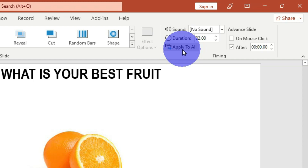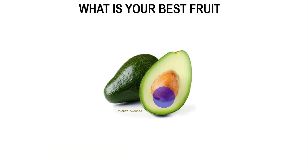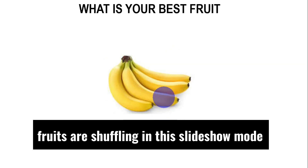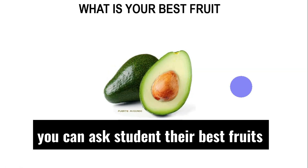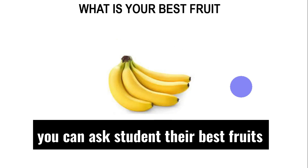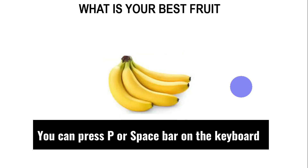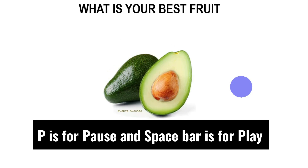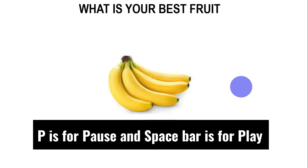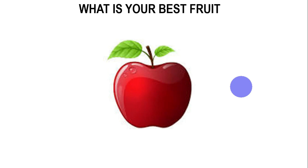Now let's jump to slideshow mode. Press F5 on the keyboard to start. Watch the slides shuffle through the fruits. The result shows Apple as the fruit — so any student who chose Banana had the wrong answer, and whoever chose Apple had the correct answer. If you want to reshuffle again, press the Spacebar on the keyboard.